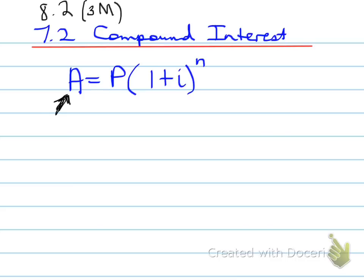All right, now A equals P times 1 plus i to the power of n. This formula here that we see is known as the compound interest formula. A equals P times 1 plus i to the power of n, I call the A-PIN formula.